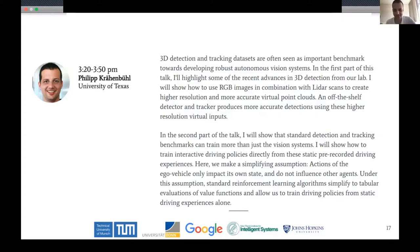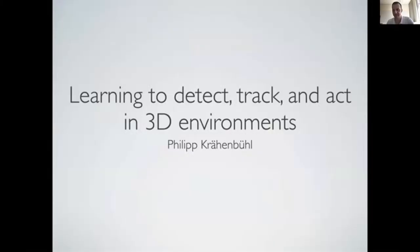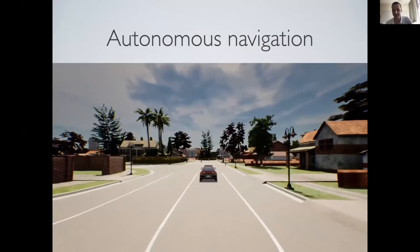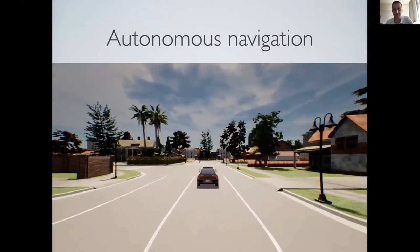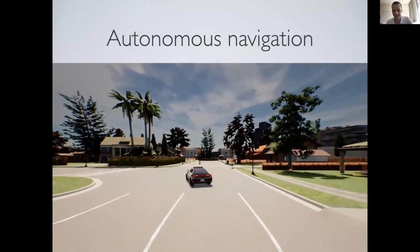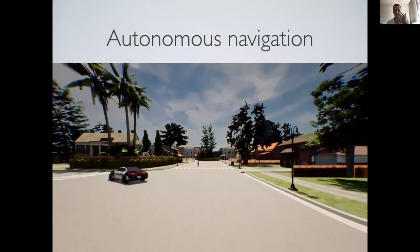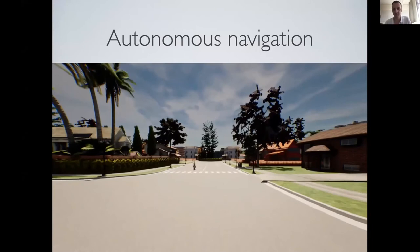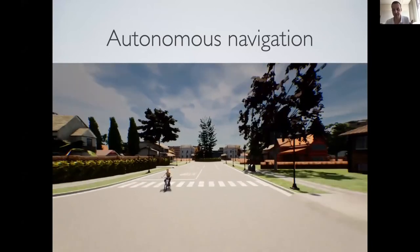Thank you very much. So today I'm going to talk about maybe less about detection and tracking than I should, and a little bit more about acting. What we're going to look at is the problem of trying to navigate a vehicle — for now in simulation — from sensor inputs alone. You obviously want to do a very good job: avoid obstacles, sense the environment so that you don't collide with it.